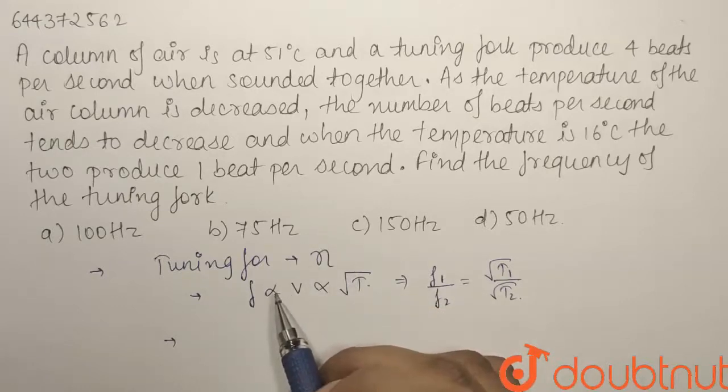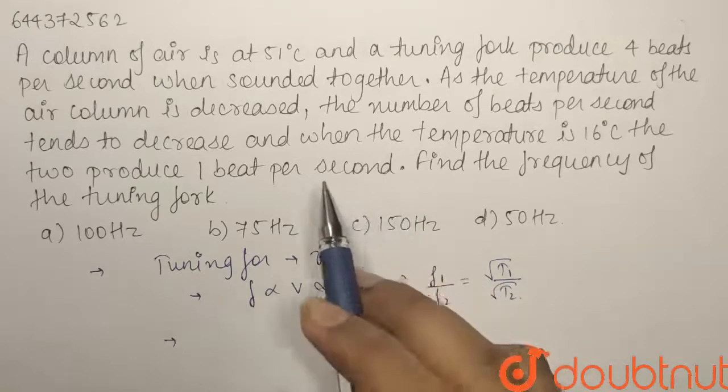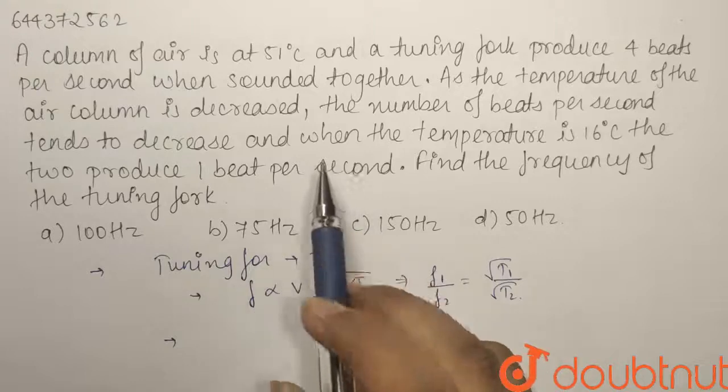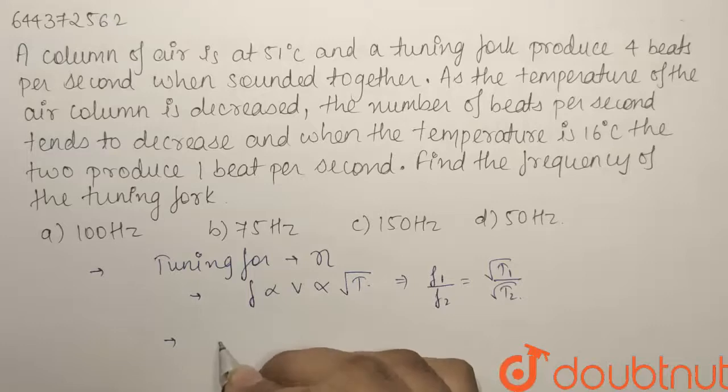It is clear cut that the first frequency should be greater, that is frequency of air column should be greater. Initially if it was F, so F1 minus eta is equals to 4.